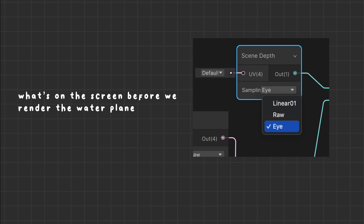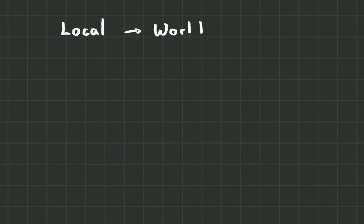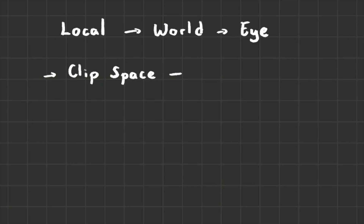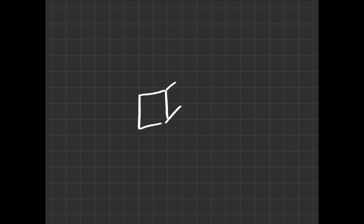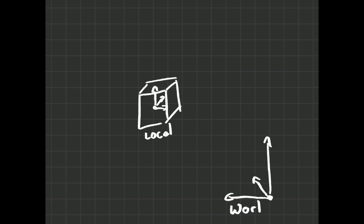The first one is scene depth. This provides the camera depth buffer before our object is rendered — the object that the shader is applied to, in our case the water plane. If we select the eye coordinate system, it will be transformed so that the camera or eye is sitting at zero, zero, zero. Here is a quick overview of the rendering process: first our object is in local space, then that's converted to world space, then to view space or eye space, then clip space, then screen space. The eye option in scene depth essentially tells us how far from the camera the object is.